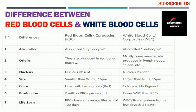The fourth basis for comparison is size. Red blood cells are smaller than white blood cells, while white blood cells are larger than red blood cells. Talking about color — the fifth basis — red blood cells are filled with hemoglobin and are reddish in color, while white blood cells have no pigment.